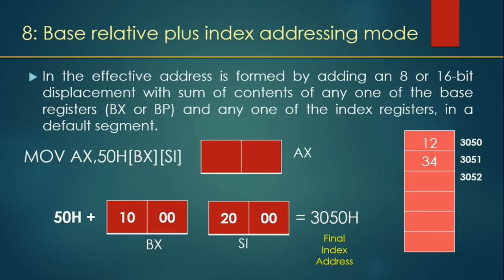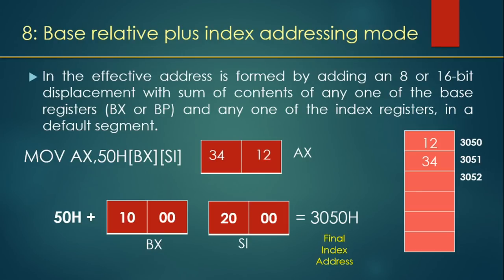The last is base relative plus index addressing mode. In this mode, we have a combination of both previous modes. We have the BX register, the index register SI, and an additional displacement offset — all three values are added together to get the effective address. In the example, AX will receive data from memory location 50h + 1000h + 2000h = 3050h, and the data from that location is copied to the AX register.